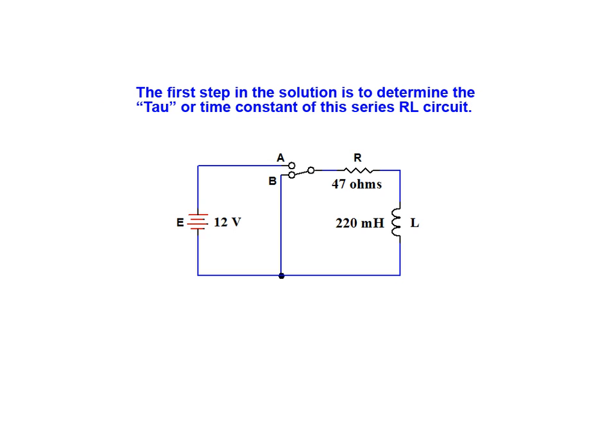The first step in the solution is to determine the tau or time constant of this series RL circuit. As can be seen by the result of this calculation, the time constant for this RL circuit is 4.681 milliseconds.